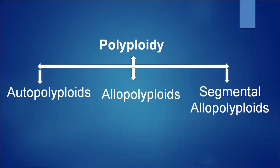Polyploidy generally occurs in nature because of these two processes. Many ornamental plants are polyploid. Many angiosperms, mosses, and conifers are often polyploid. Polyploidy is very common in plants but very rare in animals.